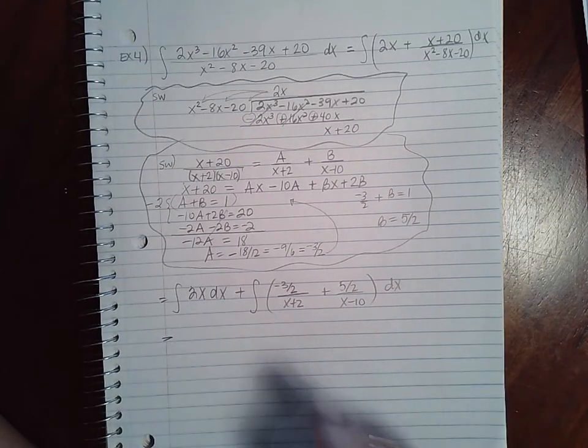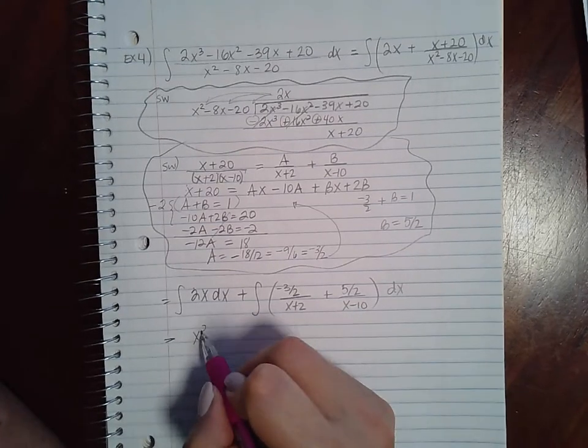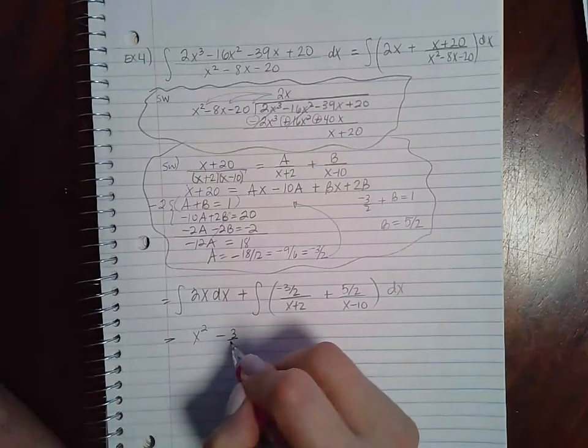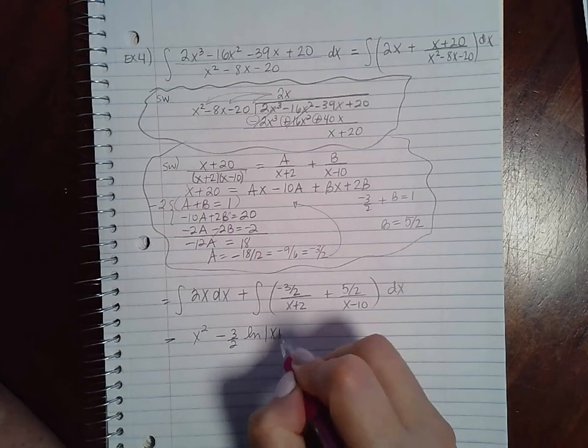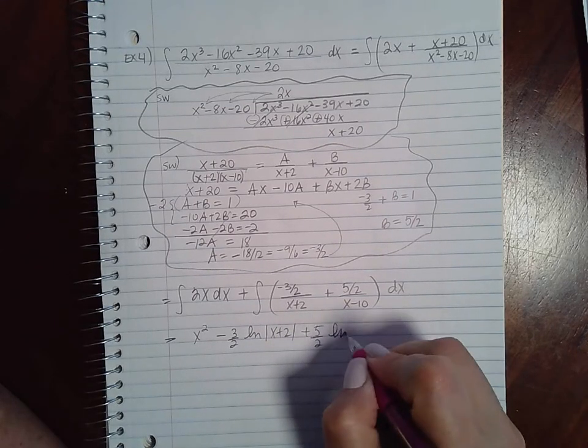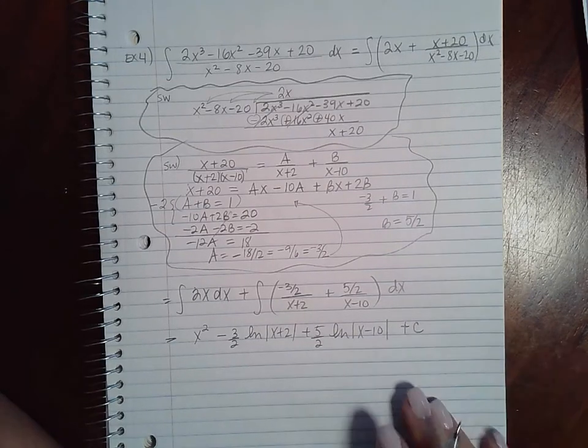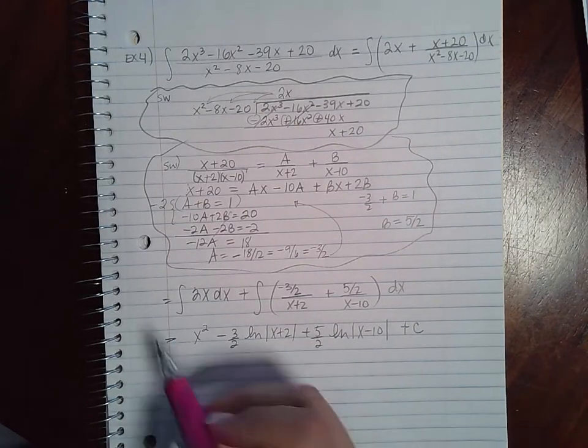And I can separate it or I can just integrate everything right here right now. So this integral is going to become x squared. This is going to be negative 3 halves ln of x plus 2. This is going to be 5 halves, ln of x minus 10. And then of course plus c because it was an indefinite integral.